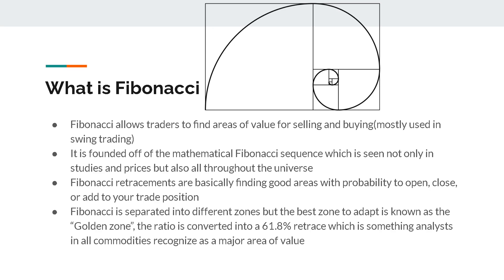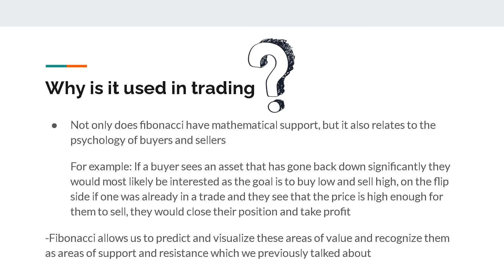Fibonacci is separated into different zones, but the best zone to take note of is known as the golden zone, which is pretty much a golden ratio compared into a 61.8% retrace — something analysts and all commodities recognize as a major area of value.